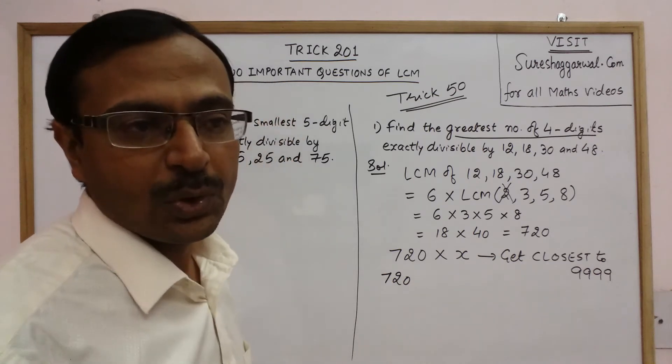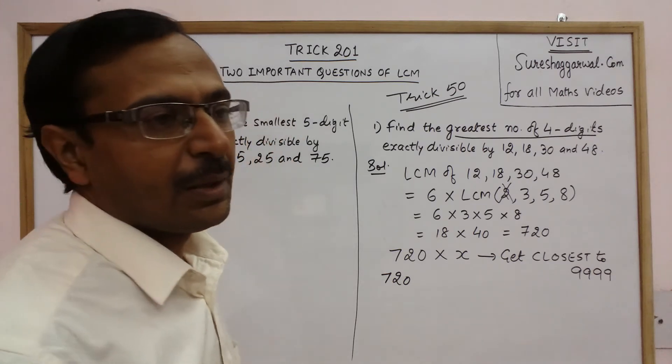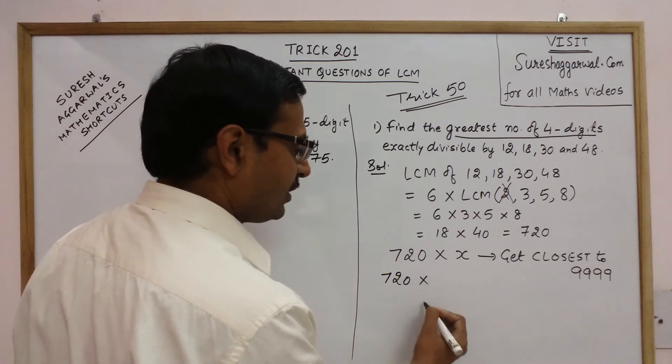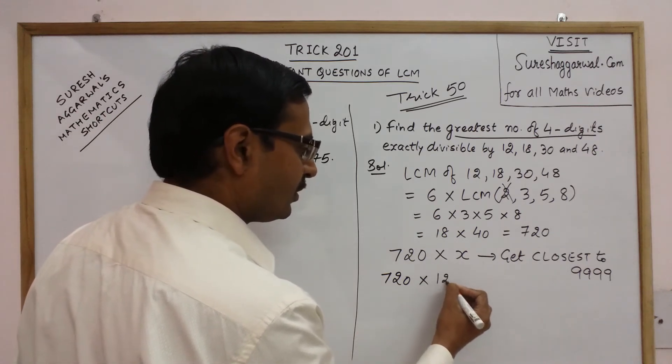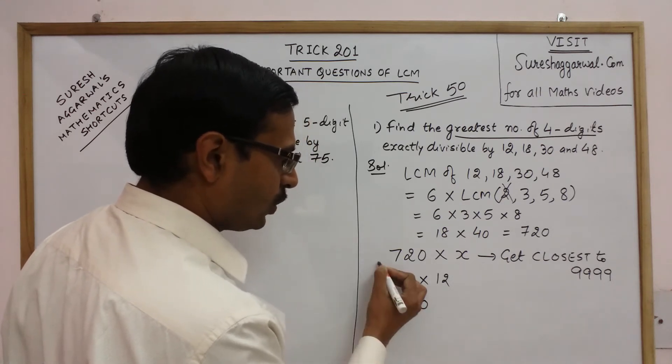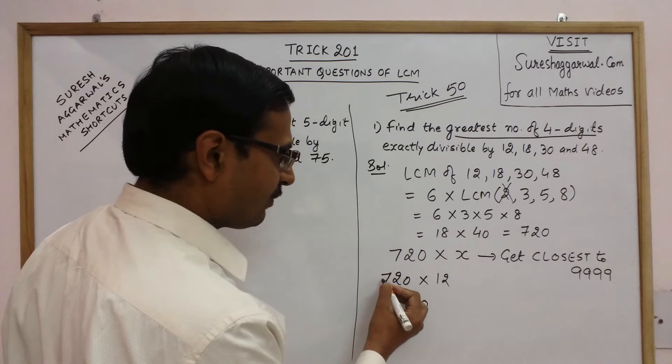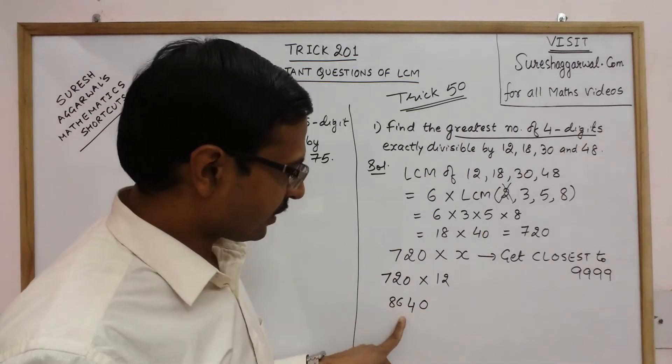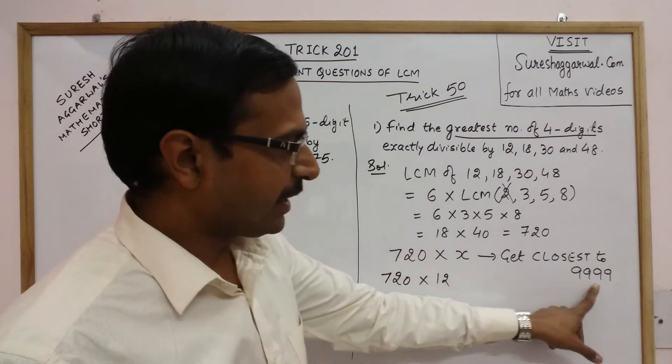So I need to just point out a number which I can multiply with 720 and get closest to 9999. So obviously the number will be more than 10. Let me try with 12. So 720 into 12, 2×4 is 2. So 12×7 is 84 into 86. Now 8640 is further off from 9999.